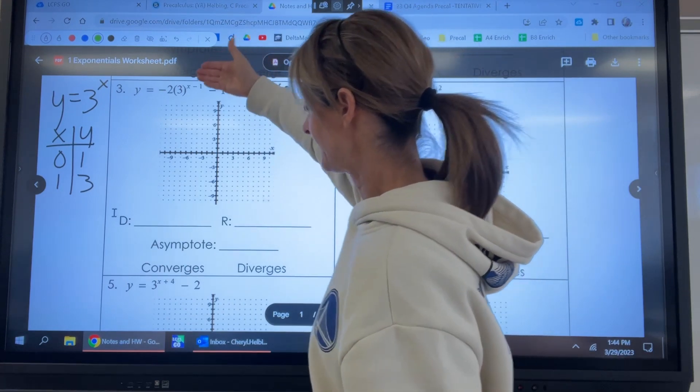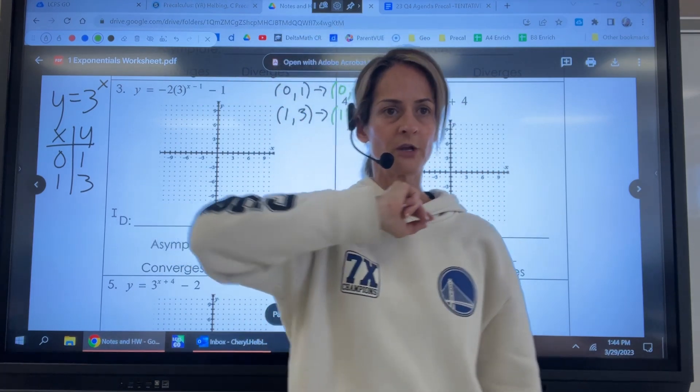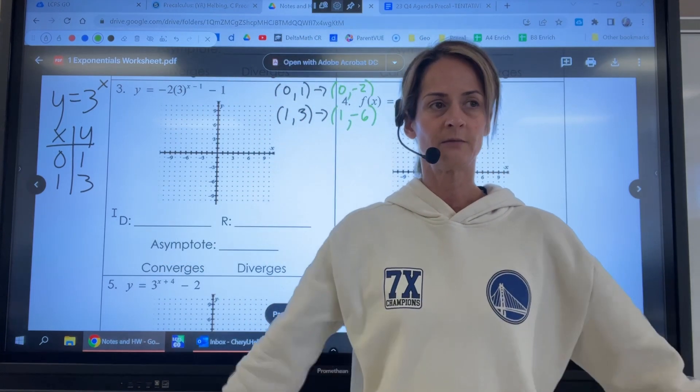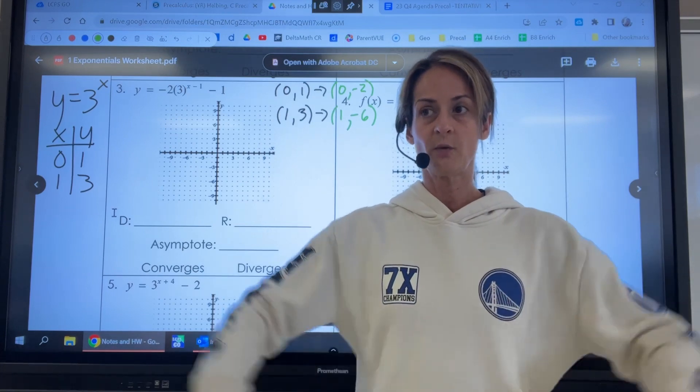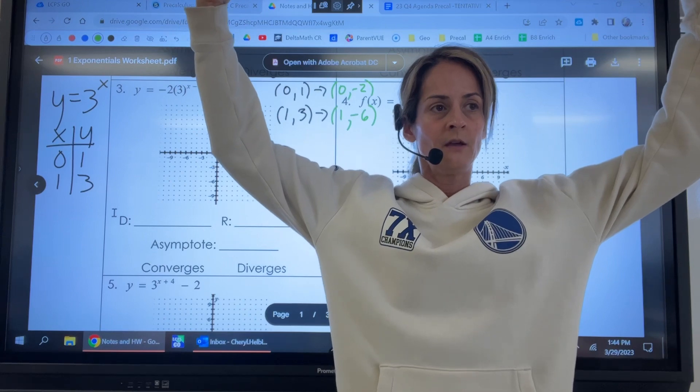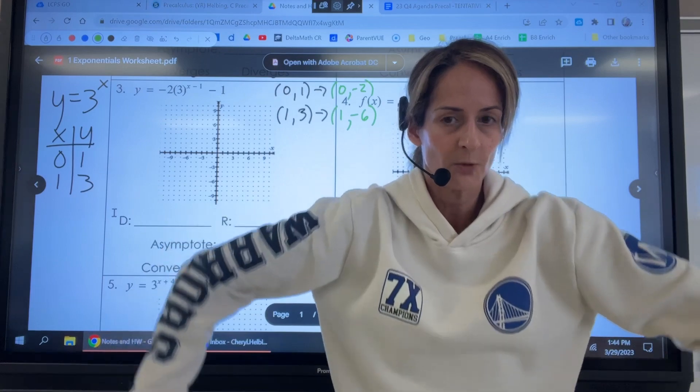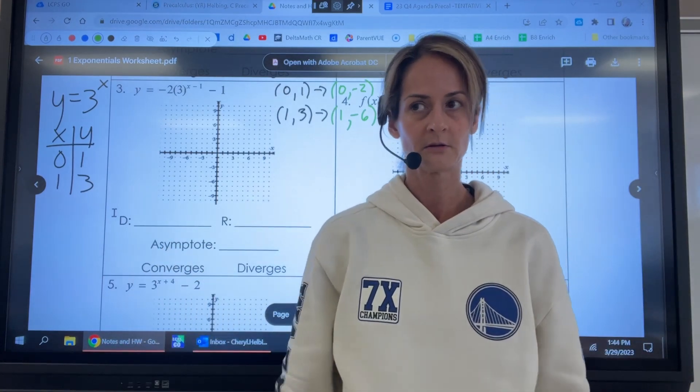So that is going to account for the reflection over the x-axis. Just like back when we were learning about quadratics in Algebra 2, when you have a leading coefficient that's positive for y equals x squared, right, the graph opens up. If the leading coefficient is negative, it's like y equals negative x squared, the parabola is going to open down, right?